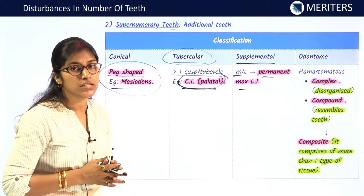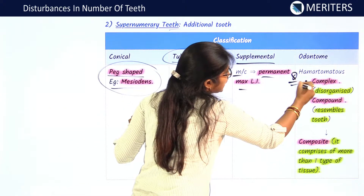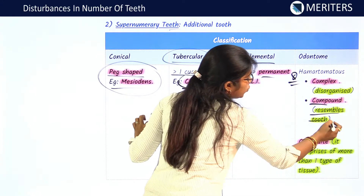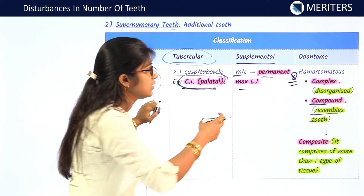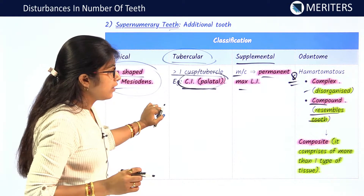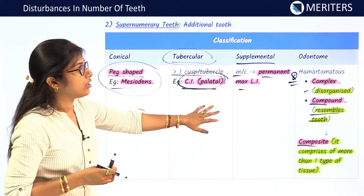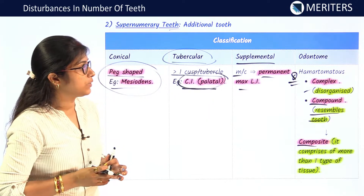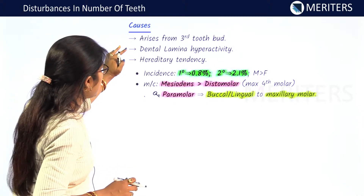Odontomes are hamartomatous structures and come in two types: complex and compound. You should be able to differentiate between them. Compound odontome resembles a tooth — so if a question describes a hamartomatous structure resembling a tooth, it is compound odontome. A disorganized hamartomatous structure is a complex odontome. Compound comprises more than one type of tissue in a tooth-like formation.